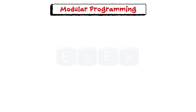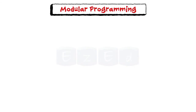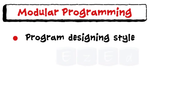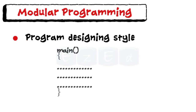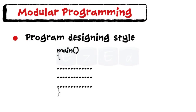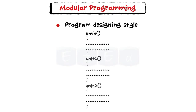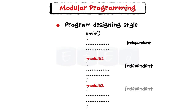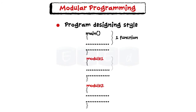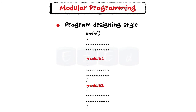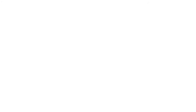Moving on to modular programming. It is a program designing style where the program is broken into smaller independent units called modules, and each module is developed independently of each other. Each module accomplishes one function and contains all the source code and variables needed to accomplish that function.